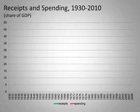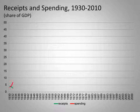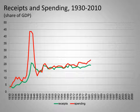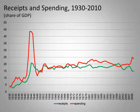This graph shows federal revenues from taxes and spending on all programs as a percentage of gross domestic product, or as a share of the economy. Aside from a sharp spike in spending during World War II, the pattern is pretty consistent, with government revenue and spending hovering around one-fifth of the economy.